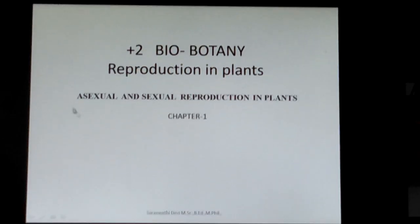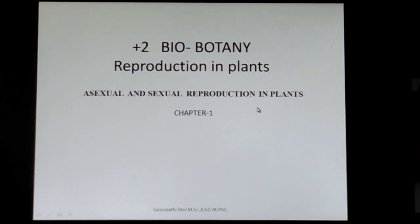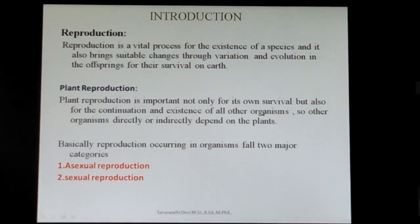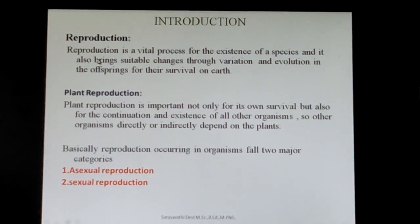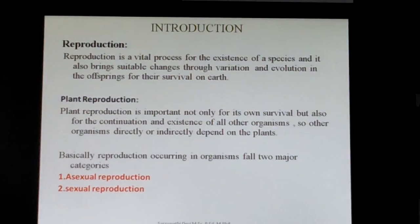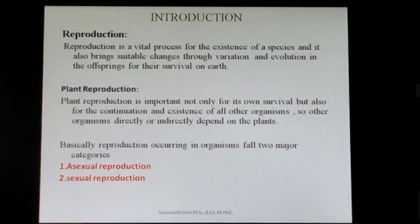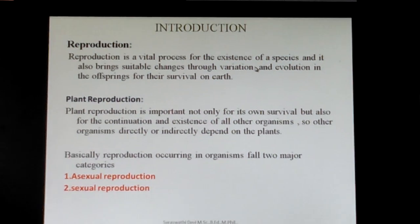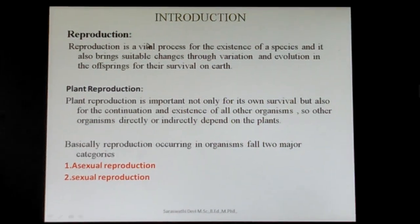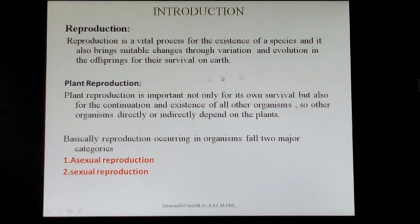Chapter 1: Asexual and Sexual Reproduction in Plants. Reproduction is a vital process that can be seen in all living things. It is useful for the existence of the species, and it brings suitable changes in the organism leading to variation and evolution.